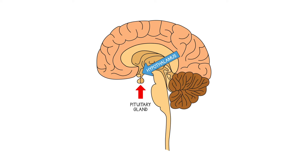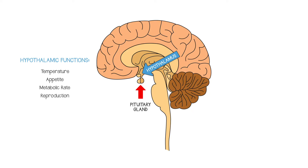The hypothalamus is a very important region of the brain involved in controlling many of the body's functions, including maintaining temperature, appetite, metabolic rate, and reproduction. The pituitary gland represents one route through which the hypothalamus can influence the rest of the body.